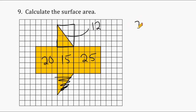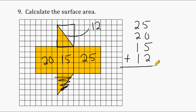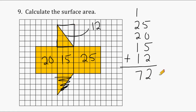We add 25 to 20 to 15 and to 12. A triangular prism has five surfaces, and the number 12 represents the area of two surfaces — our two triangles. Adding everything together gives a surface area of 72 square units.